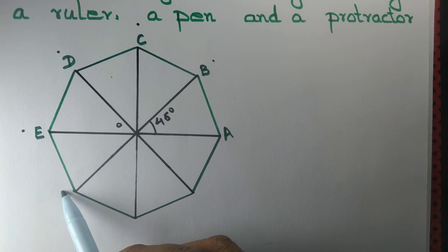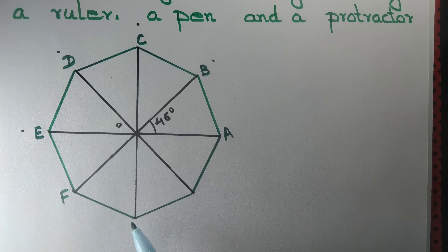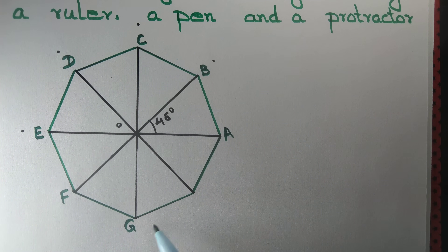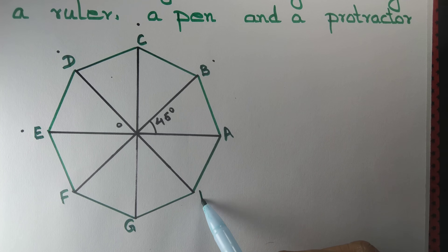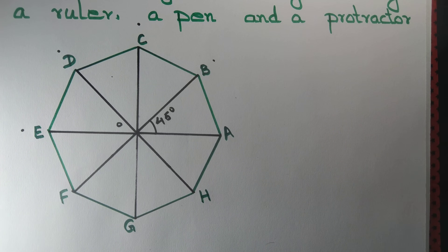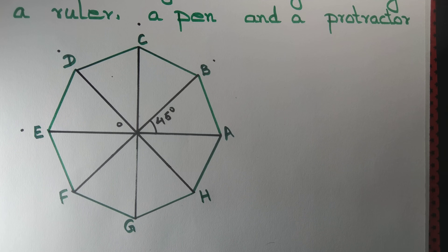Let's label the vertices A, B, C, D, E, F, G, H. So the octagon A B C D E F G H that we have drawn is a regular octagon.